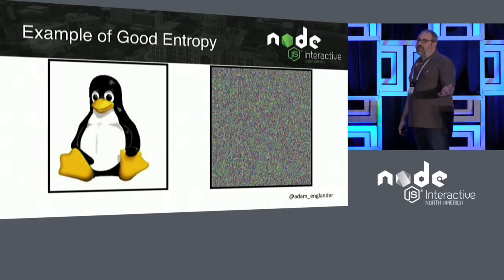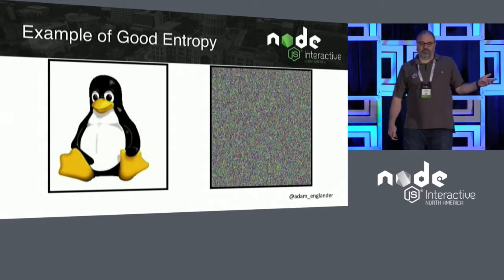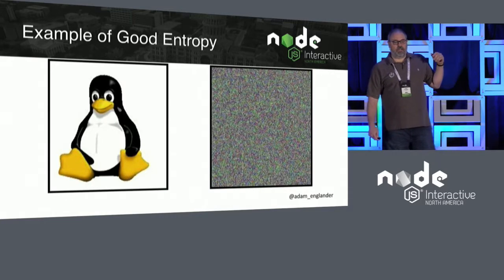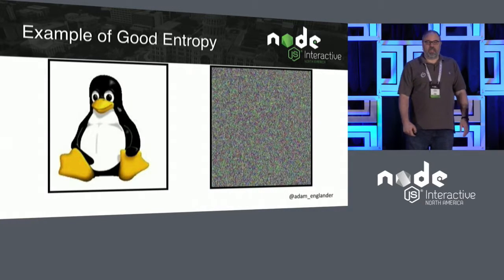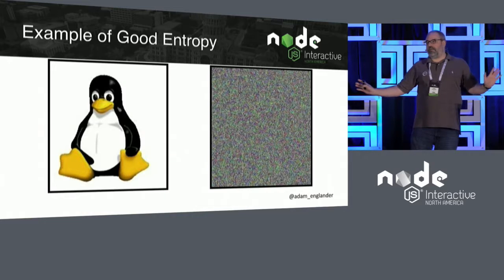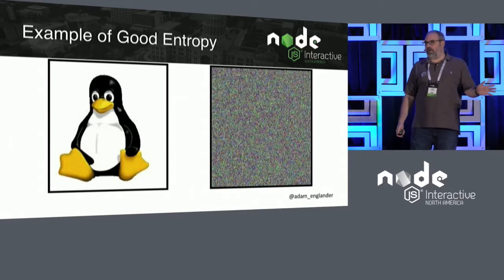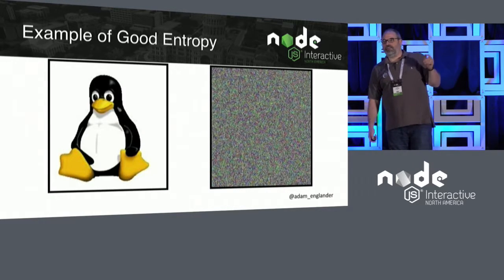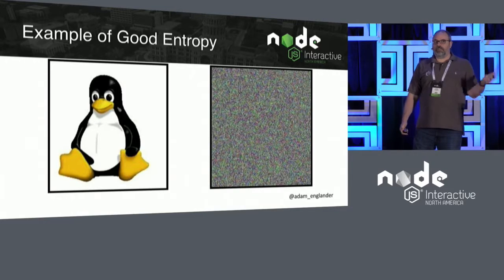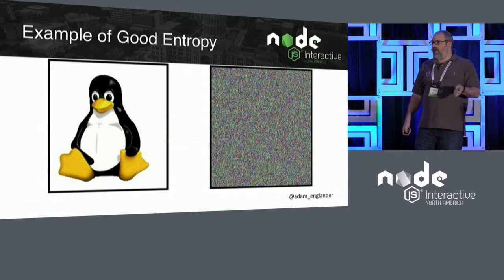And so this is what good entropy looks like. This is AES-CBC, using the cipher block chain that we just saw. You can't tell if that was a picture at all — and that's what you want. This is what you're trying to get: something that doesn't represent your previous data whatsoever. This is hard to crack.